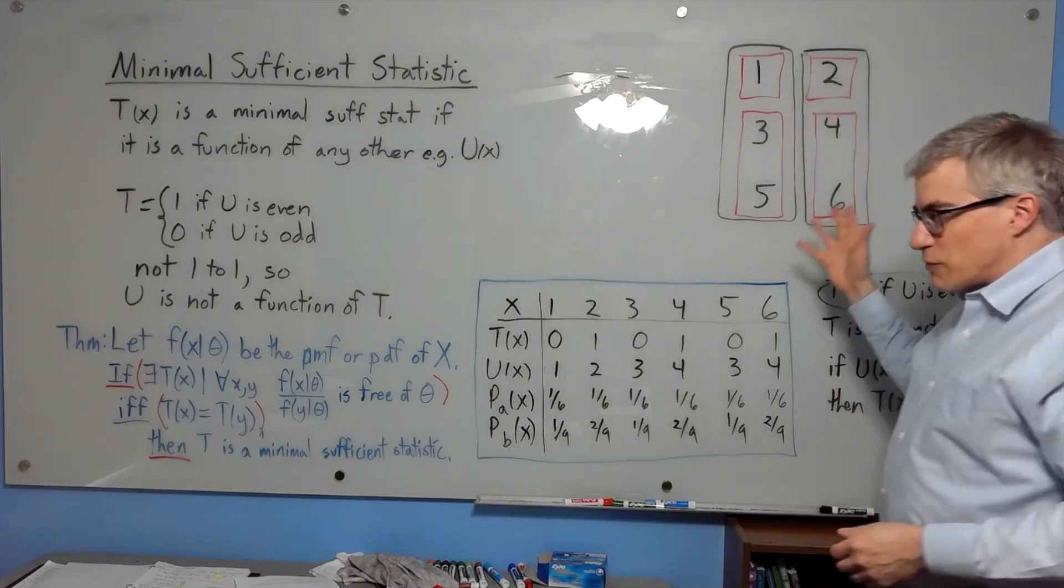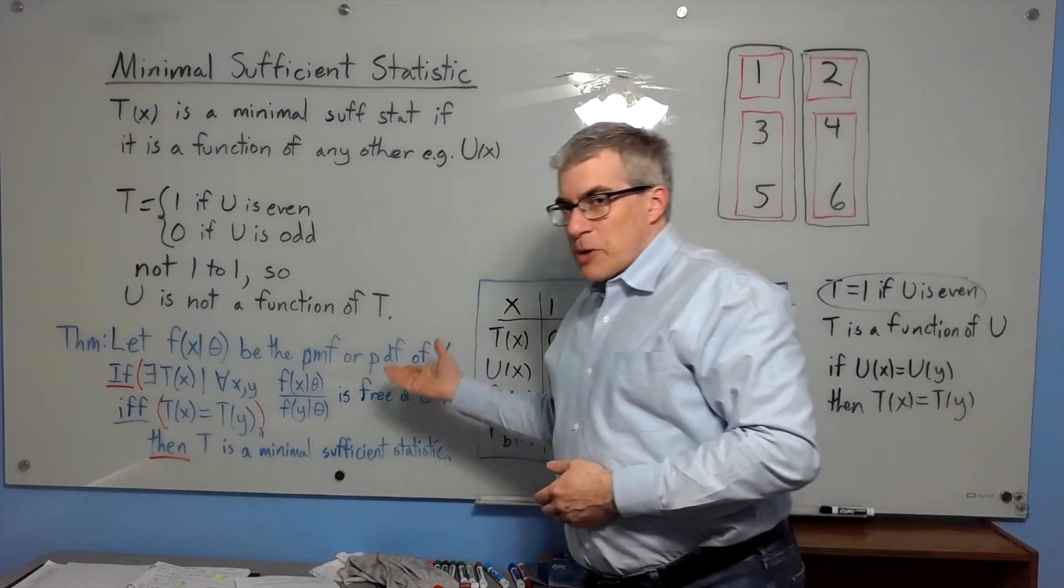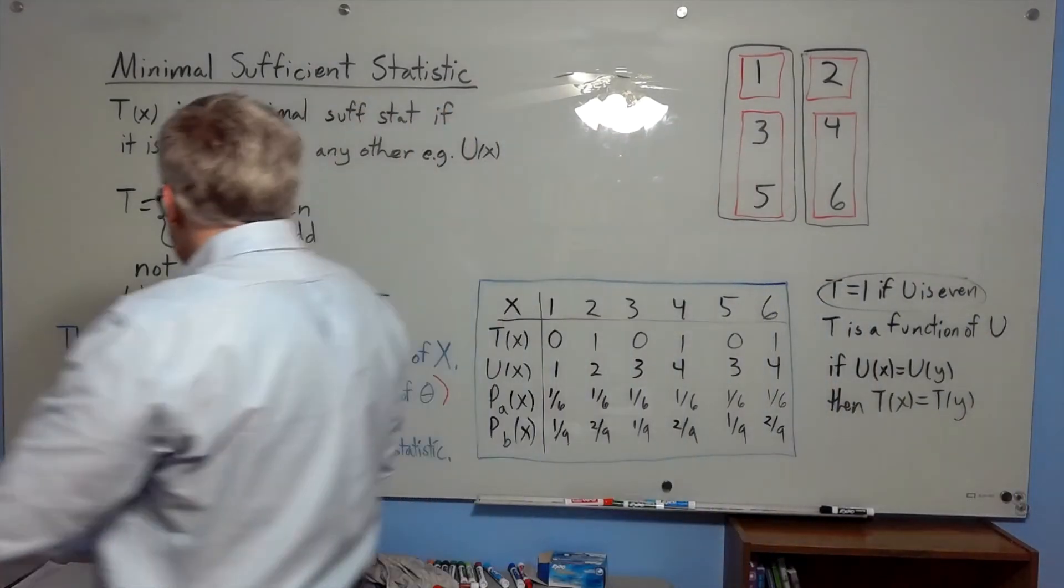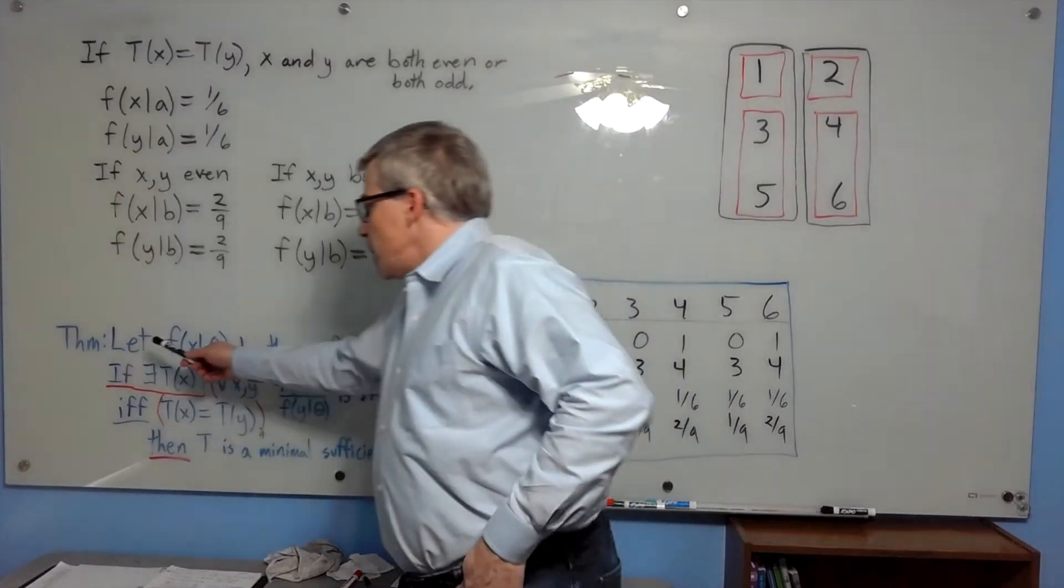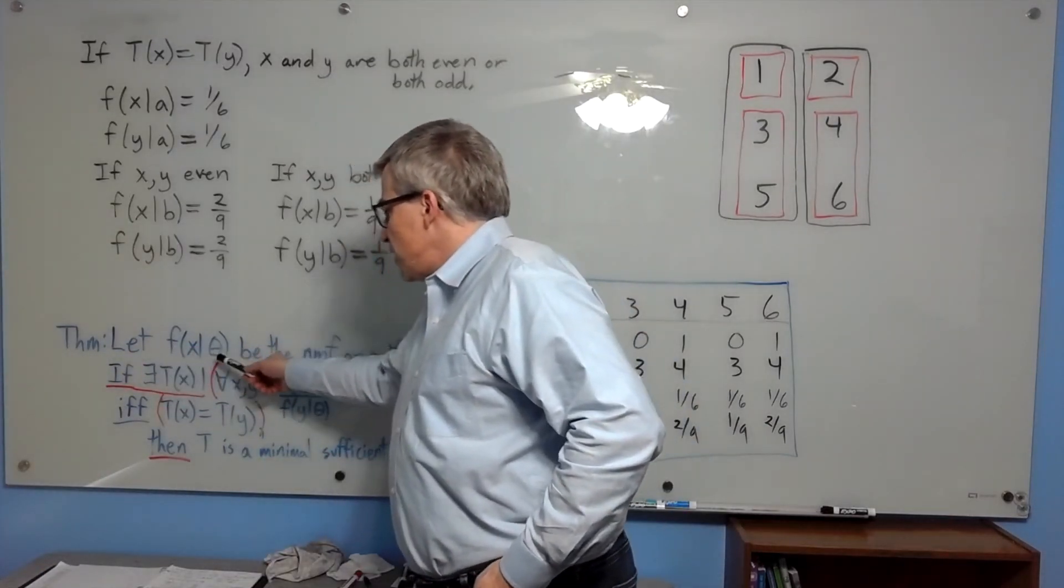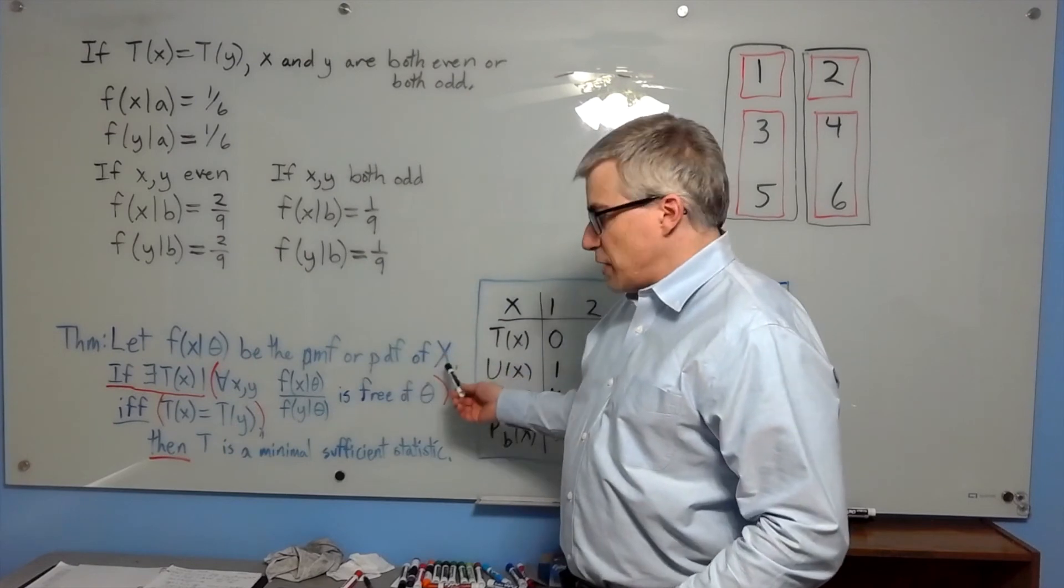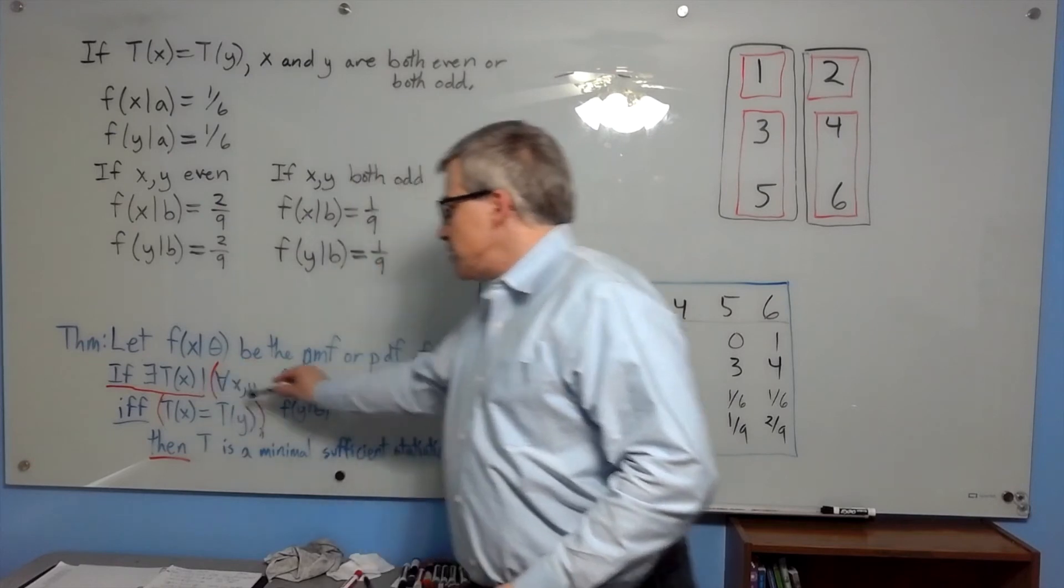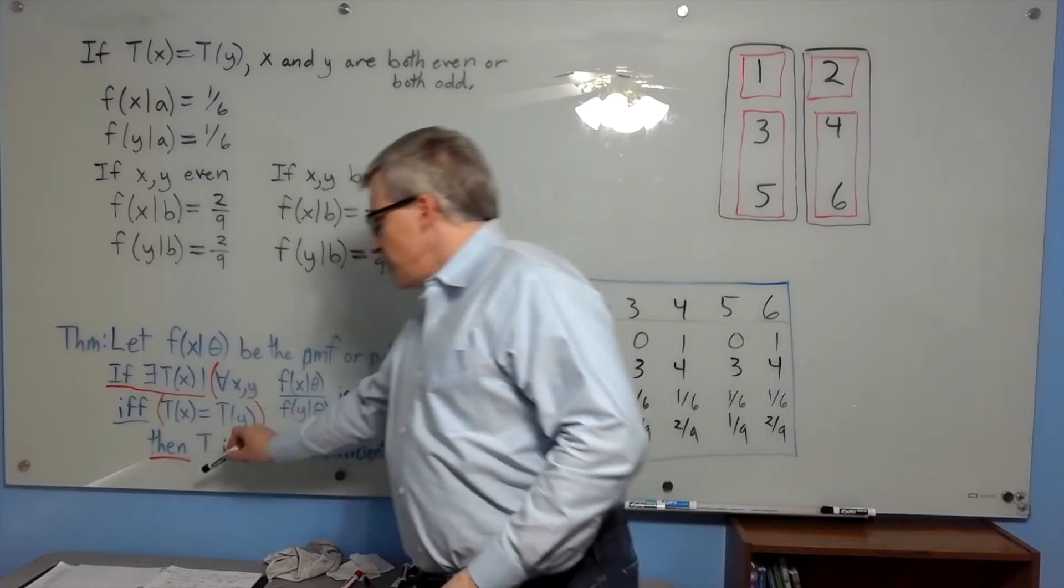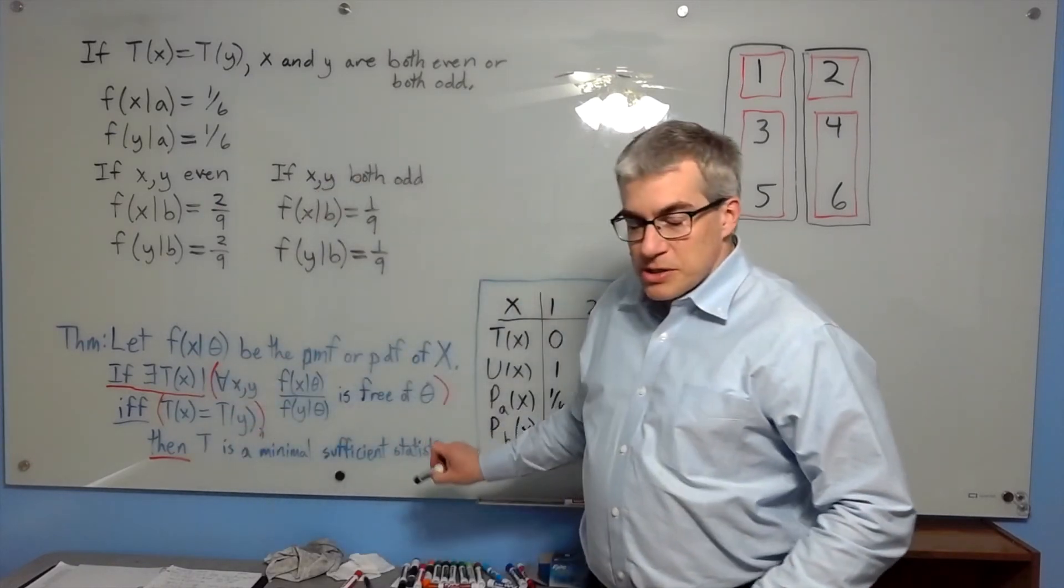Alright, that's the rough concept, but we need a way to calculate this. So we have this theorem. It's a bit wordy, so I tried to break it up a little. Let f of x given theta be the pmf or pdf of x. Now, if there exists t of x that satisfies this condition, then t is a minimal sufficient statistic.